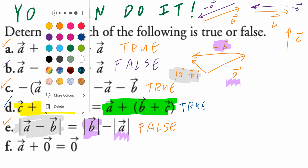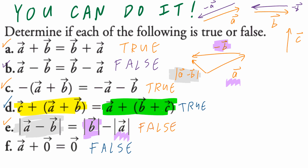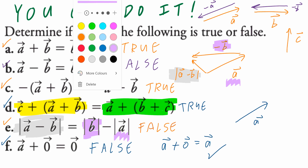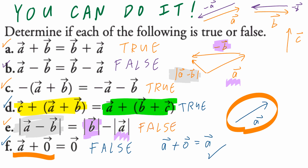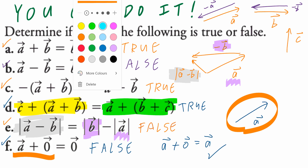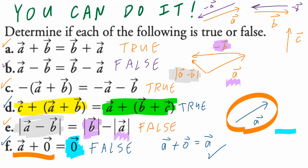Part F: vector A plus a zero vector equals a zero vector. This is false because vector A plus a zero vector should be vector A. Drawing this: vector A is right here, and if I add a zero vector, that's still going to be vector A. On the right-hand side, a zero vector has no defined direction — what is a zero vector? It's really the sum of two opposite vectors, such as vector MN plus vector NM, which equals a zero vector. So for part F, the answer is false.